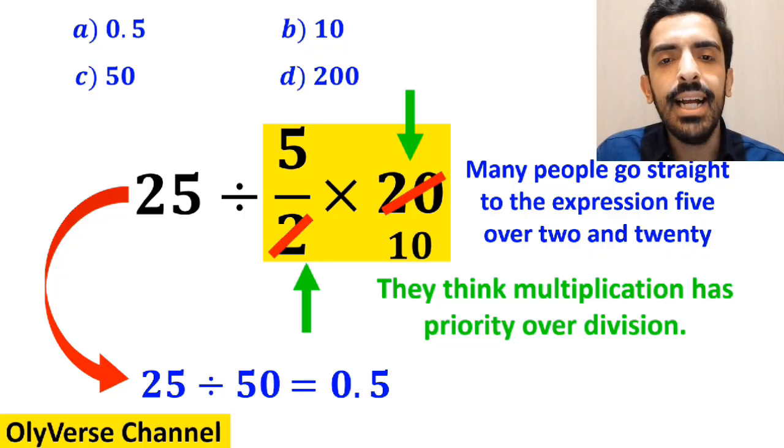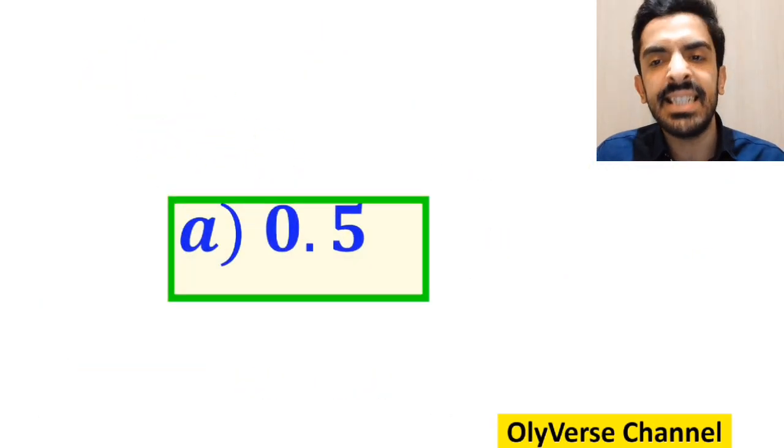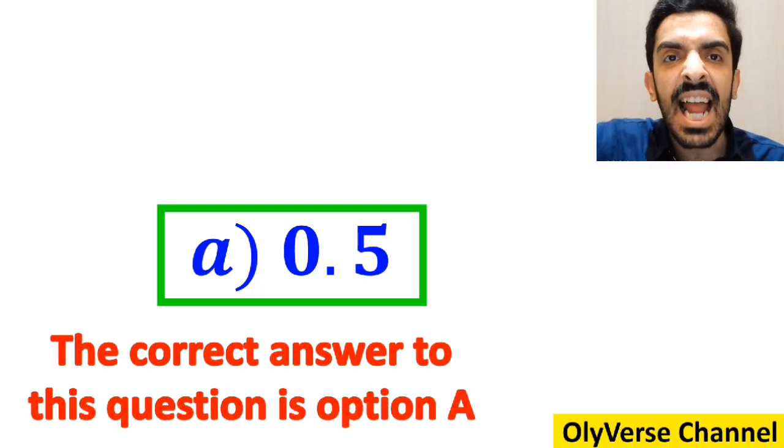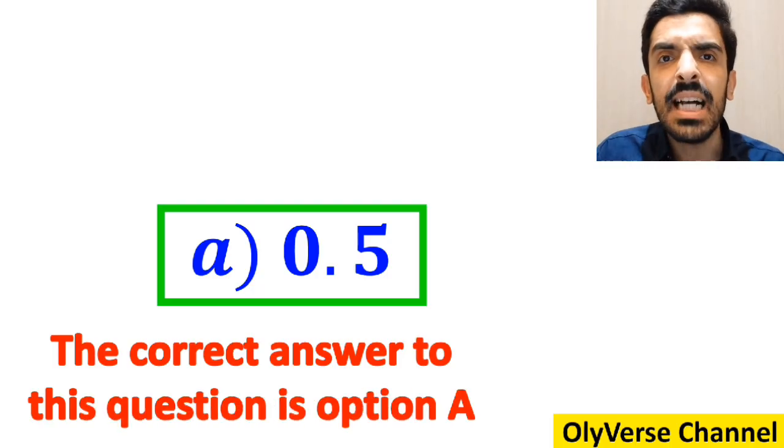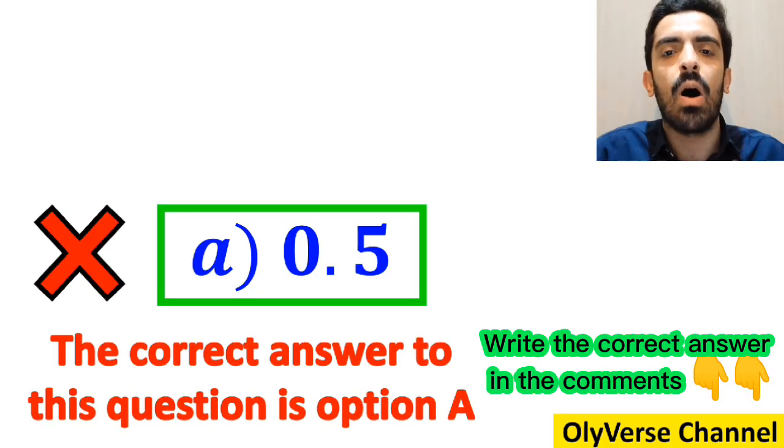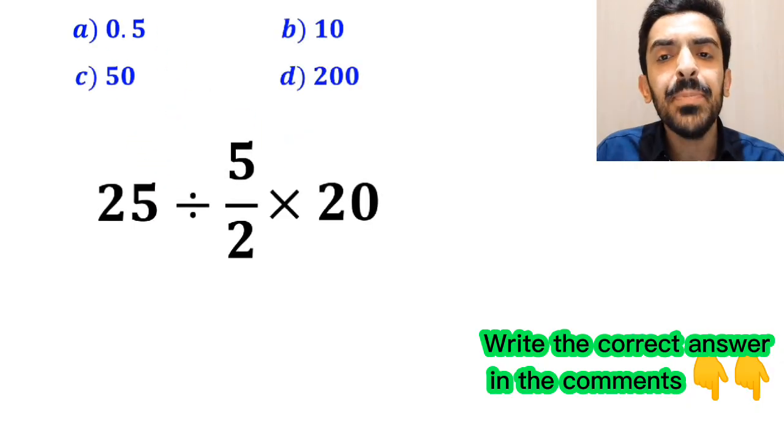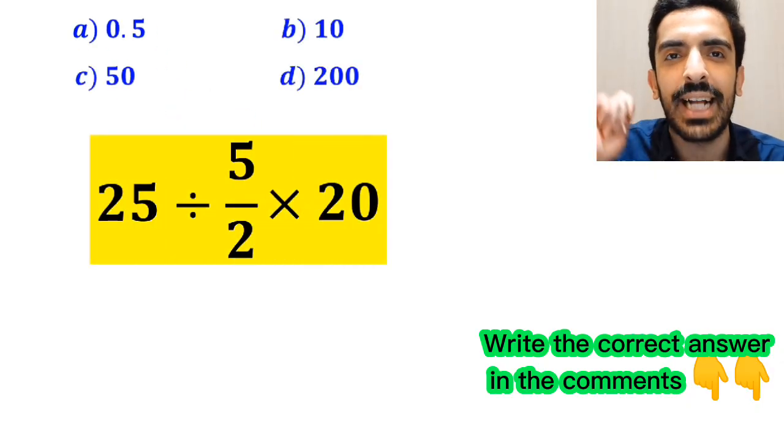Then, without any hesitation, they immediately say that the correct answer to this question is option A. However, this answer is absolutely wrong. Now let me explain step by step how we should solve this expression correctly.